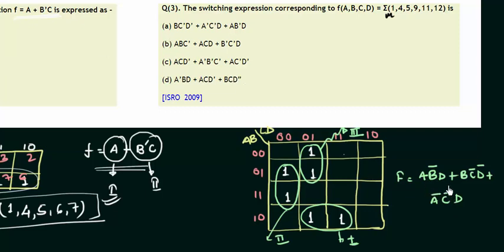So we are having A, B bar, D. A, B bar, there is A, B bar, D. Okay. B, C bar, D bar. B, C bar, D bar. A bar, C bar, D. A bar, C bar, D. So option A is correct for this question number three from the ISRO 2009.